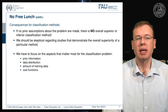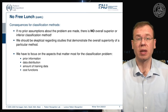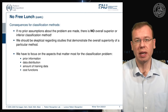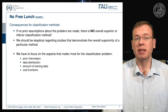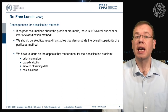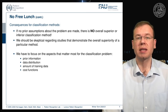We have to focus on the aspects that matter most for the classification problem. Prior information is very relevant to improve classification. The data distribution — how your data is distributed and behaves — matters greatly. The amount of training data is also very relevant for classifier performance, as is the cost function and the purpose for which you are designing the classifier.